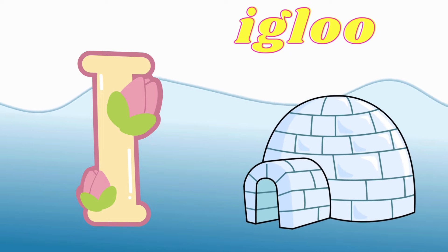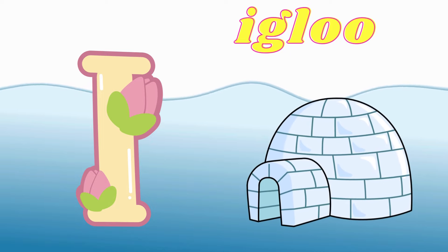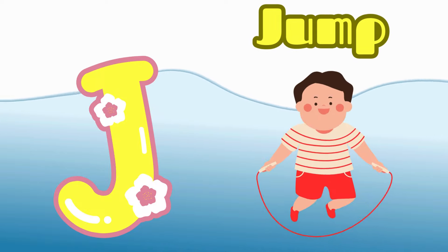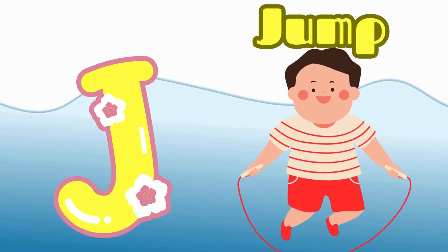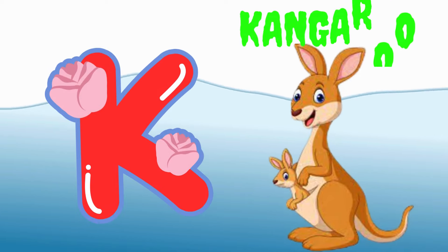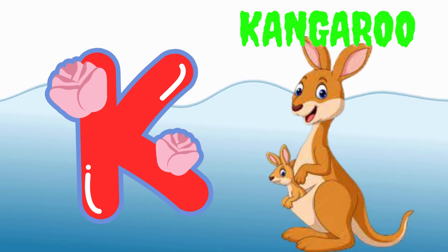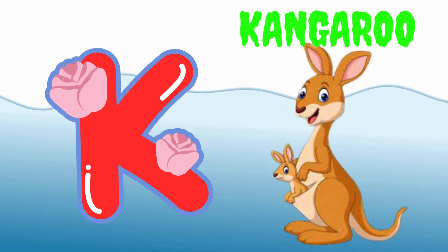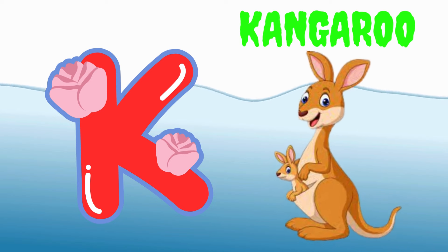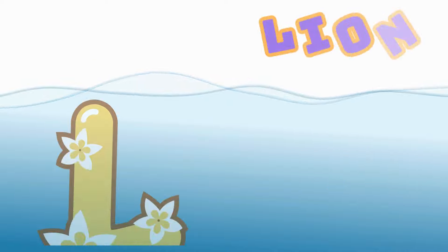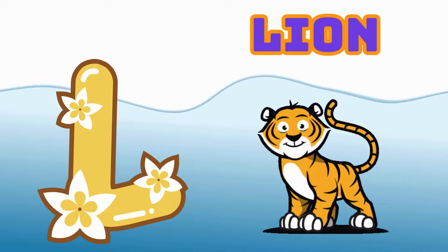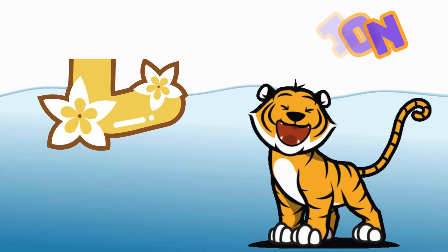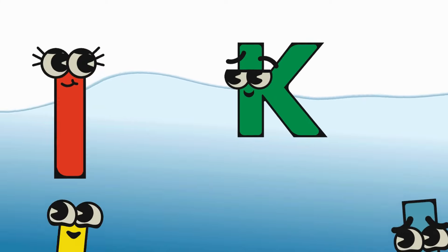I is for Igloo, I-I-Igloo. J is for Jump, J-J-Jump. K is for Kangaroo, K-K-Kangaroo. L is for Lion, L-L-Lion.